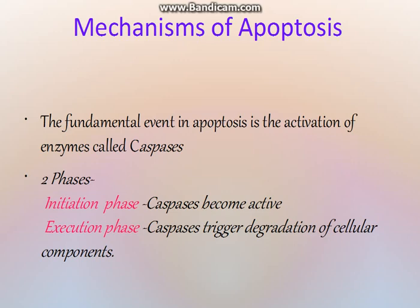Now the mechanism of apoptosis — this is very important to understand. It is a tightly regulated program. The fundamental event is the activation of enzymes known as caspases. These caspases are present in the body in an inactive stage as pro-enzymes. There are two phases: an initiation phase, in which the caspases become active, and an execution phase, in which the caspases trigger degradation of cellular components.